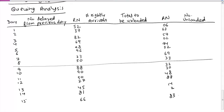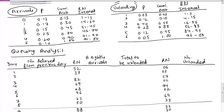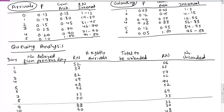Using these two sets of random numbers, we apply the arrival table. The first number is 52, which lies in a certain range, so arrivals will be 3. The second number is 37, which lies in this range, so the number of arrivals is 2, and so on.